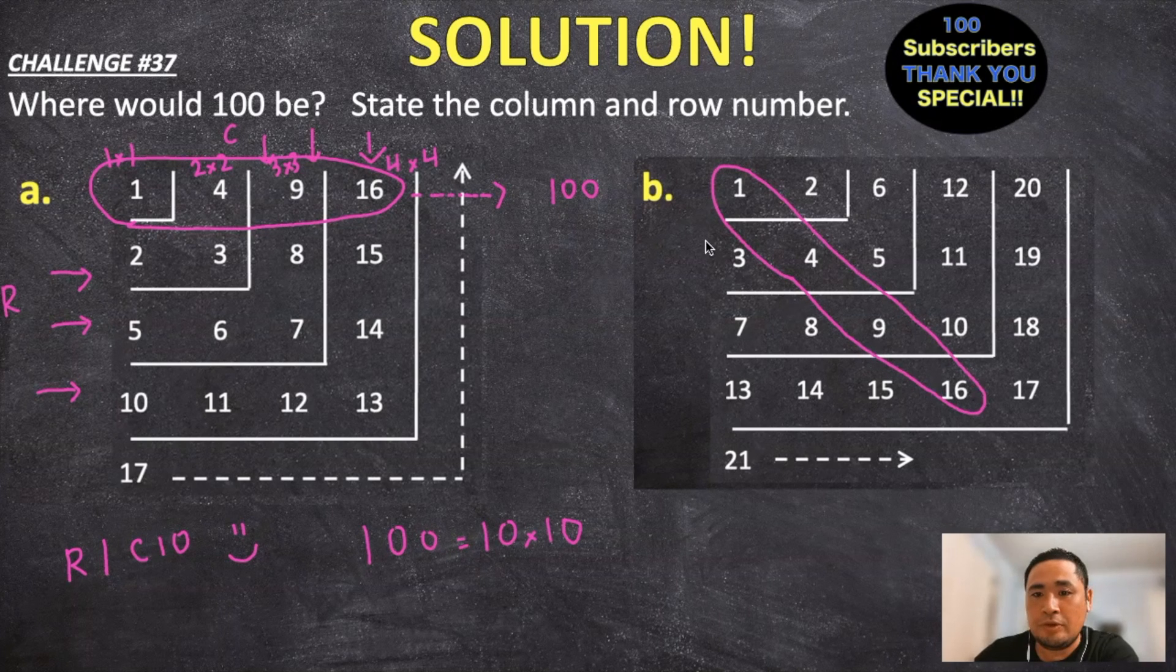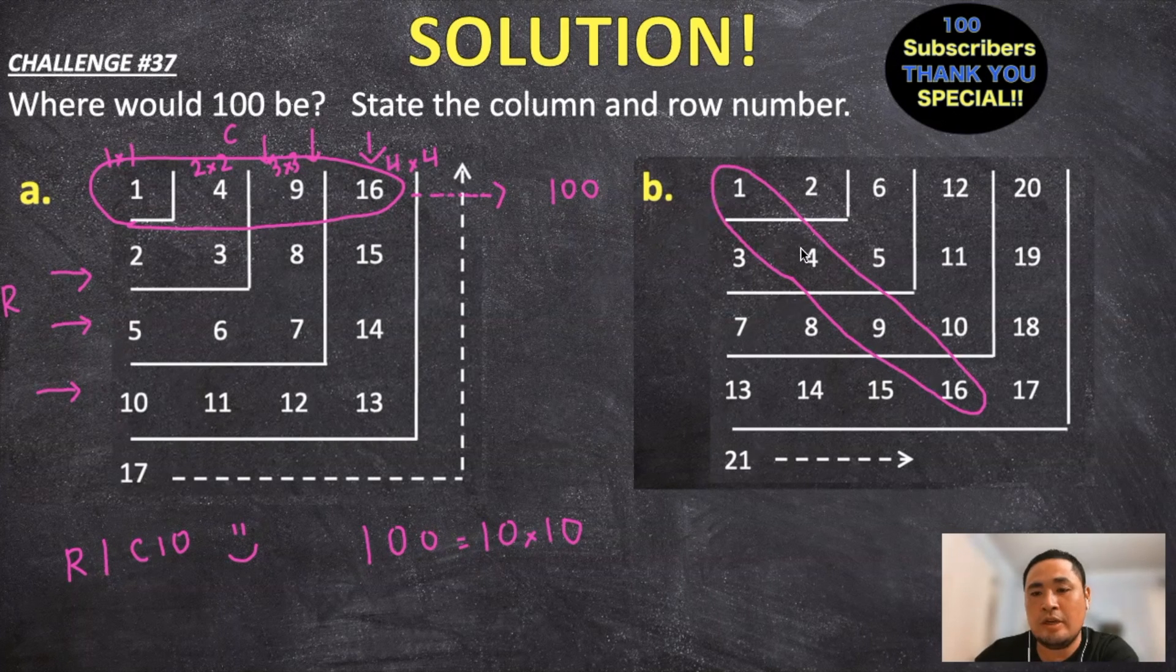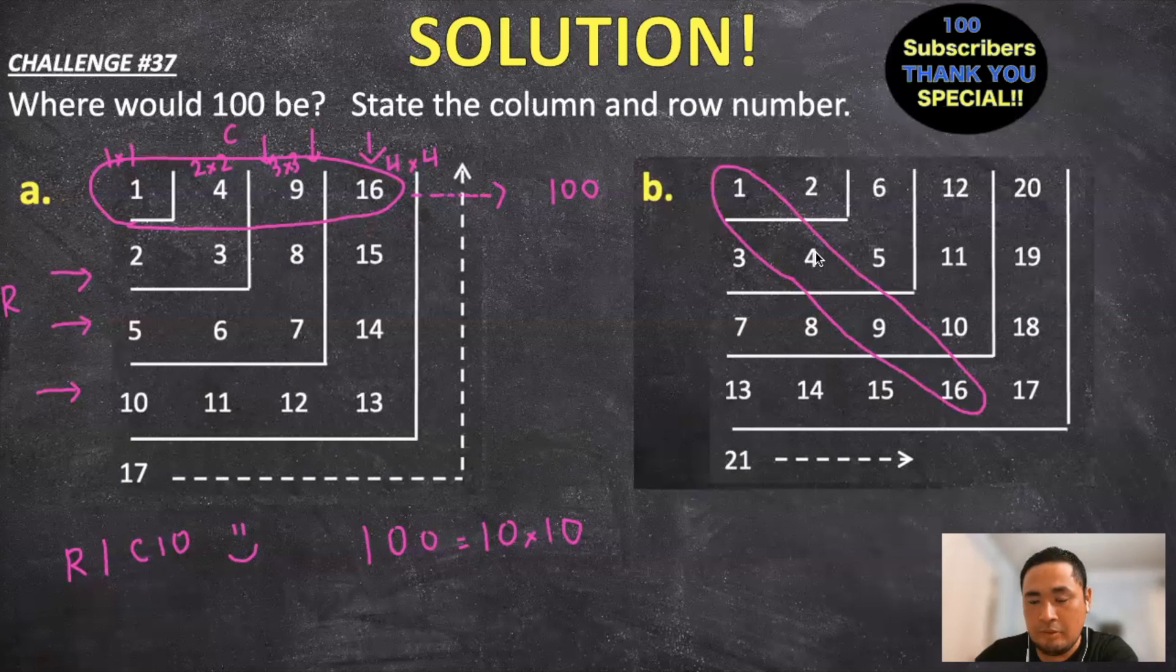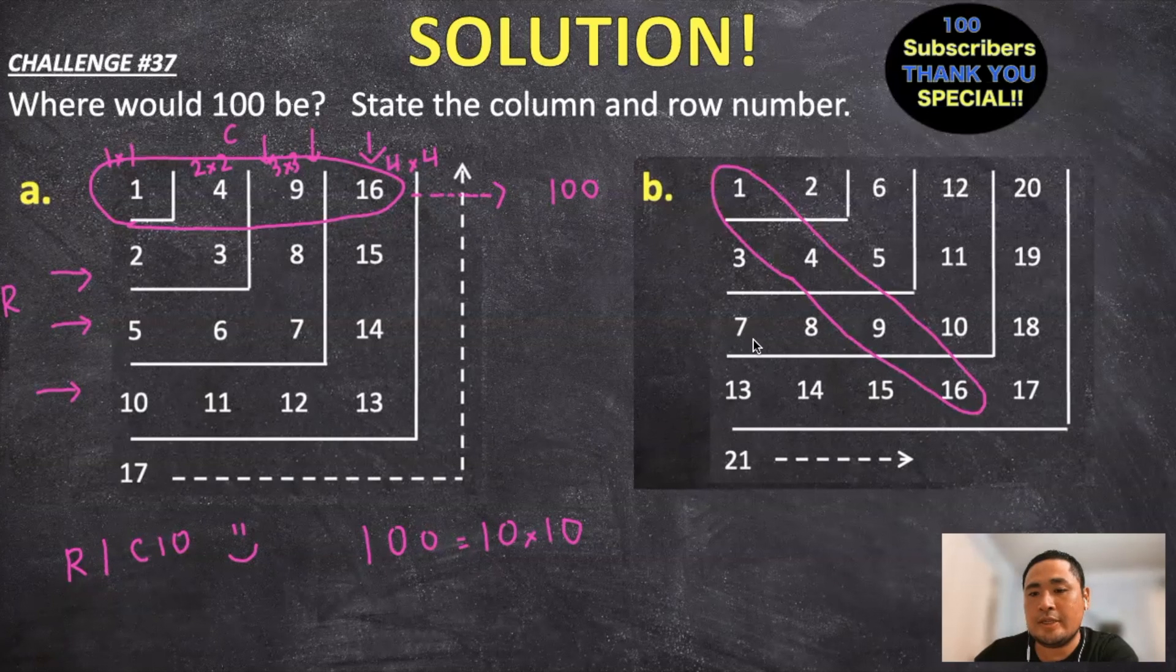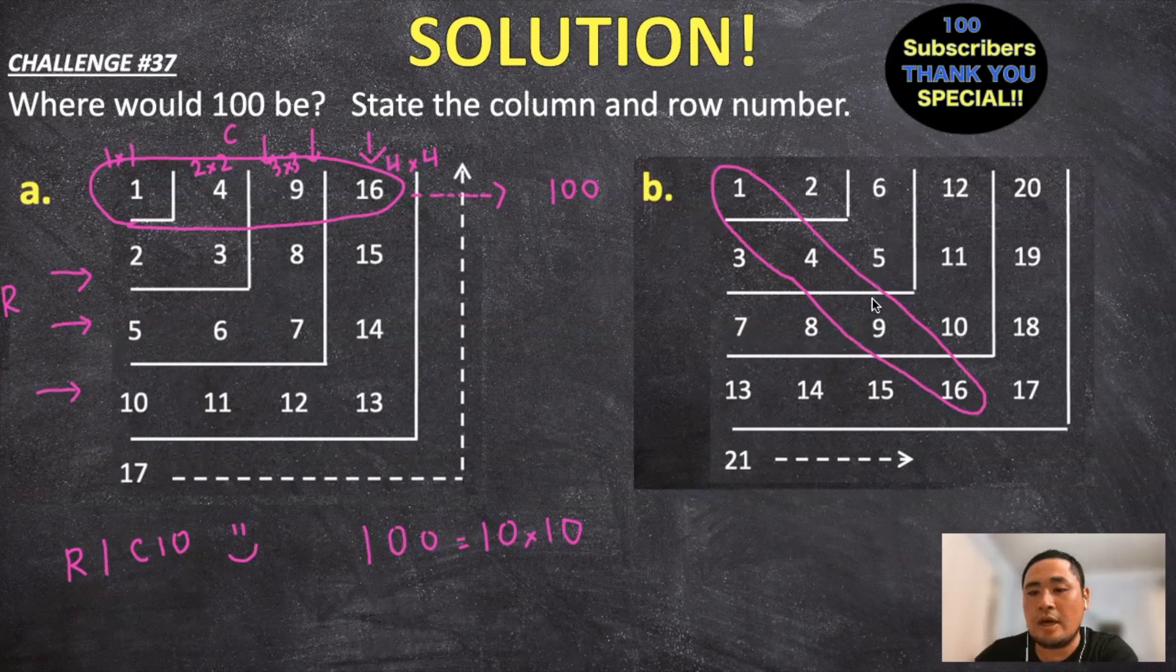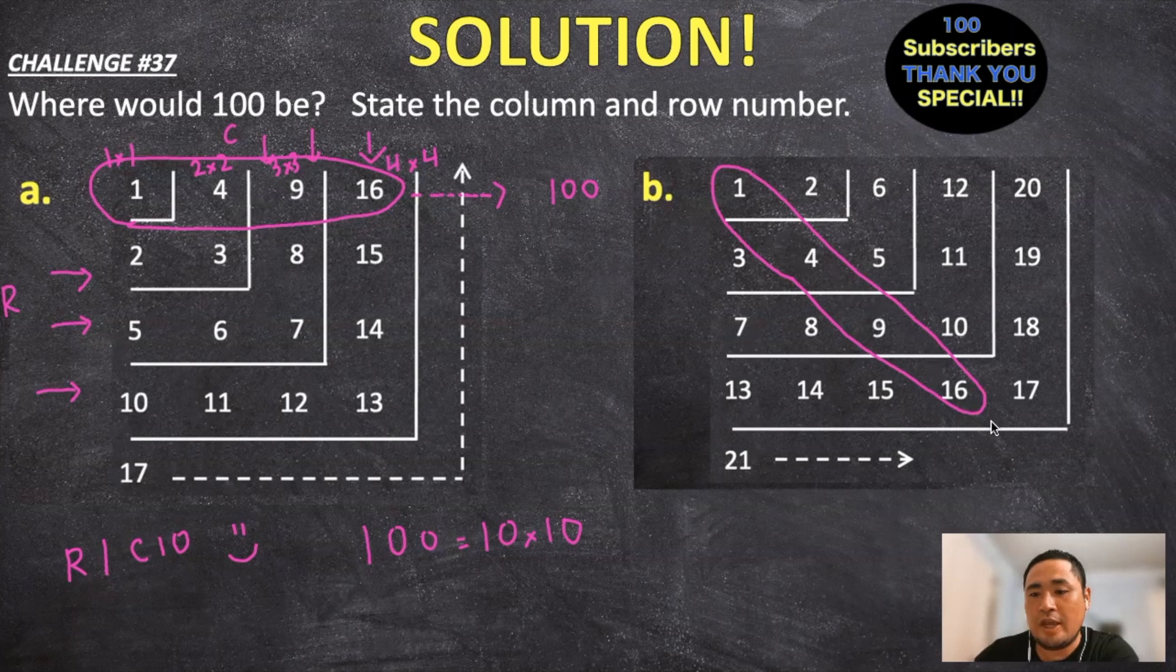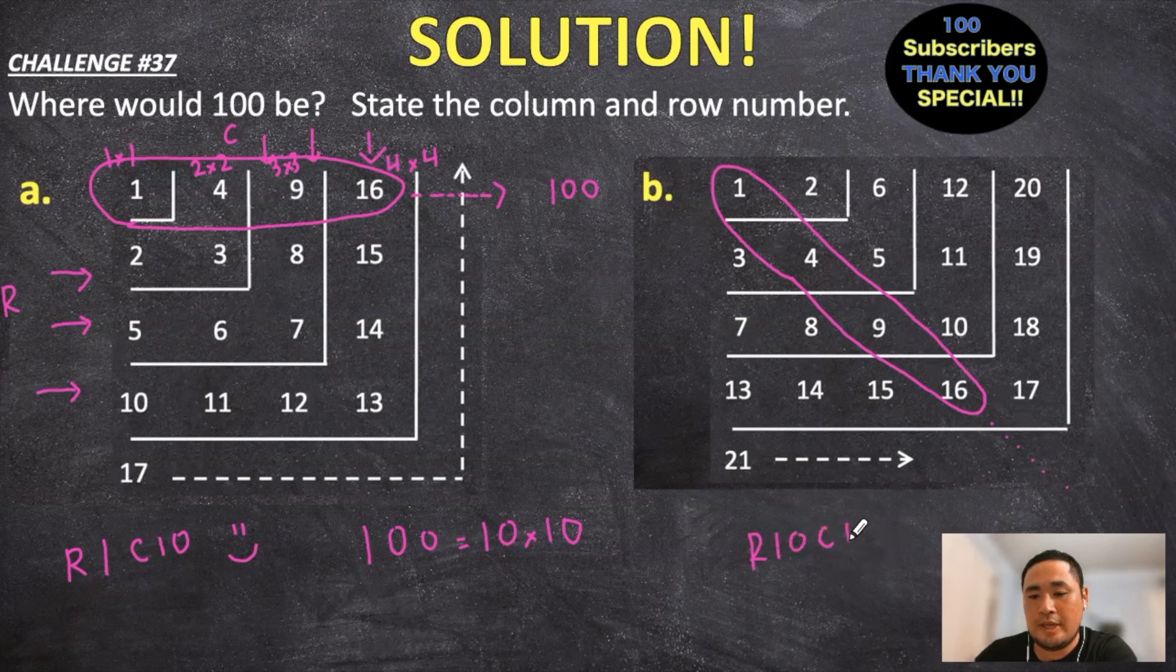Now for these numbers you'll notice that the 1 is on row 1, column 1; 4 is on row 2, column 2; and 9 is on row 3, column 3. So if we kept going down across the diagonal, the number 100 will fall under row 10, column 10.